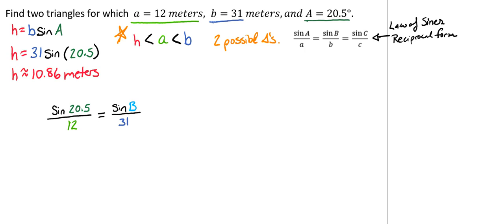So we have the sine of 20.5 over 12 equals the sine of B over 31. And we want to get that sine of B by itself. So we're going to multiply both sides by 31, which allows us to cancel out our 31s. So now we see that we have 31 times the sine of 20.5, all divided by 12. And that gives us our sine of B. So we need to separate our sine from our B. So we're going to take the inverse of sine of both sides to isolate the measure of B.